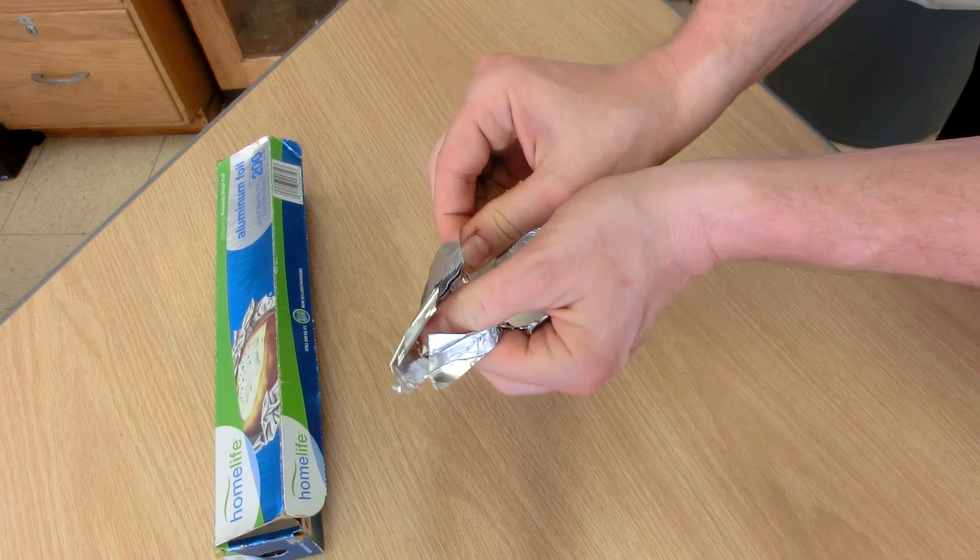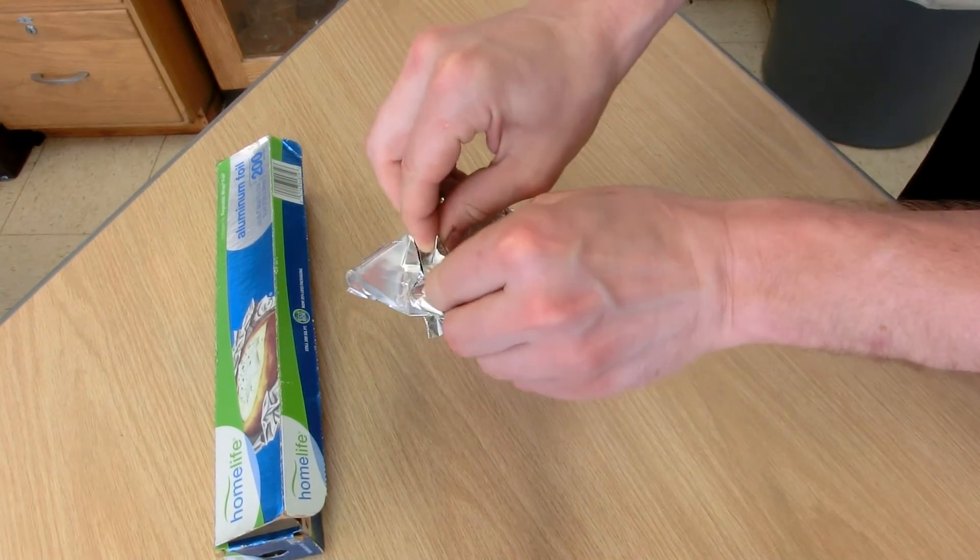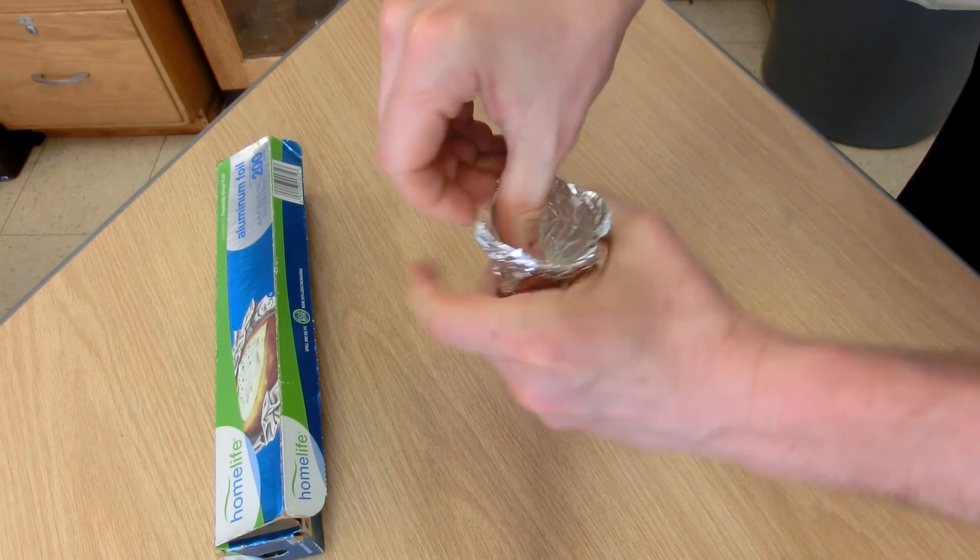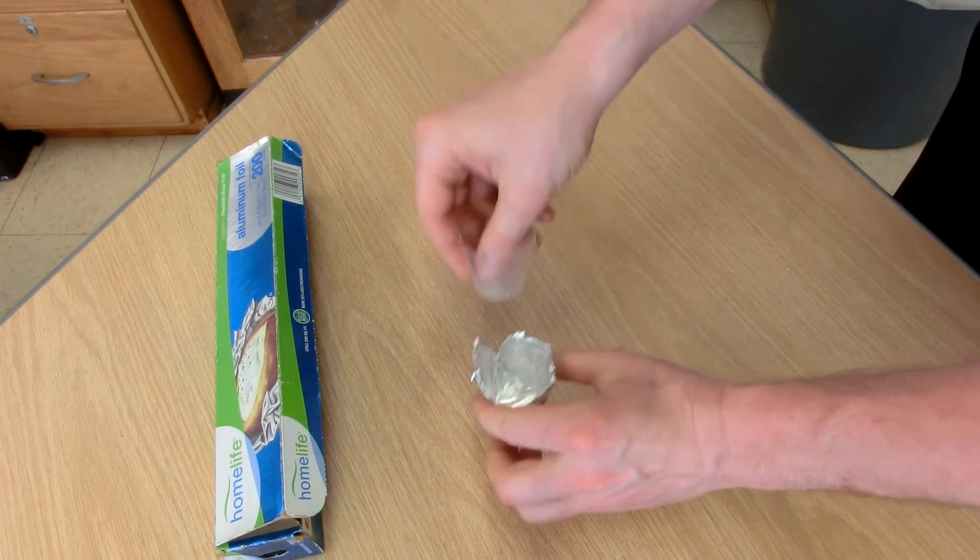Fold it across the top, and you've basically made a cup out of aluminum foil.